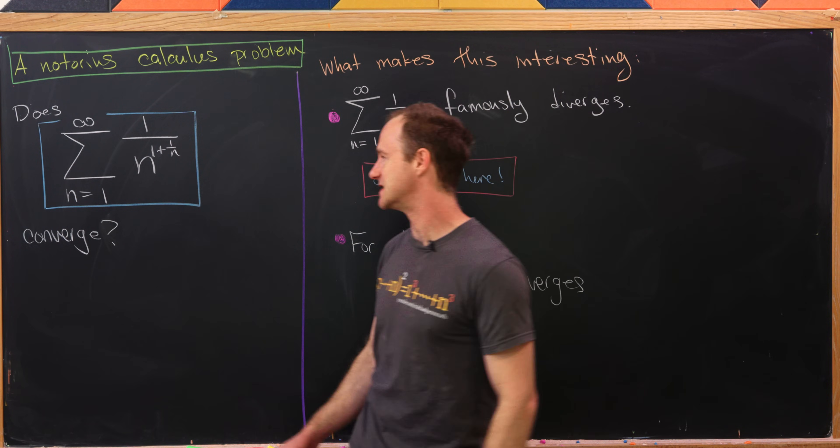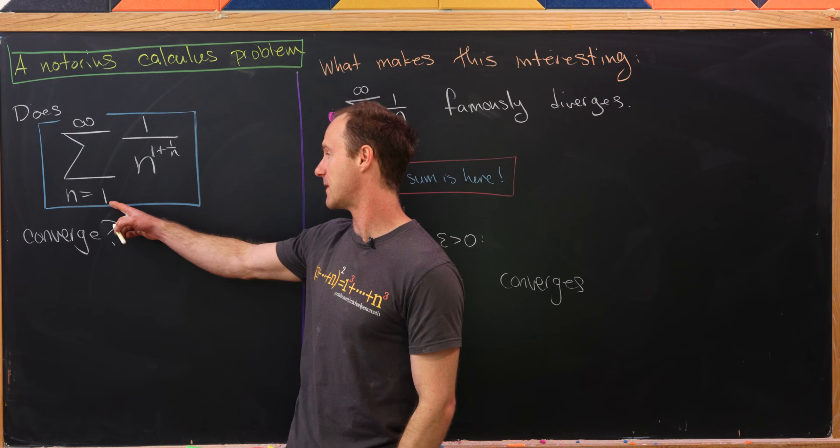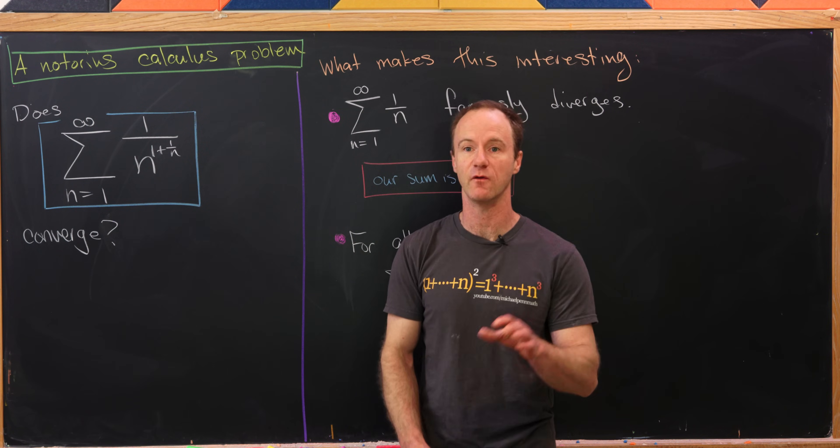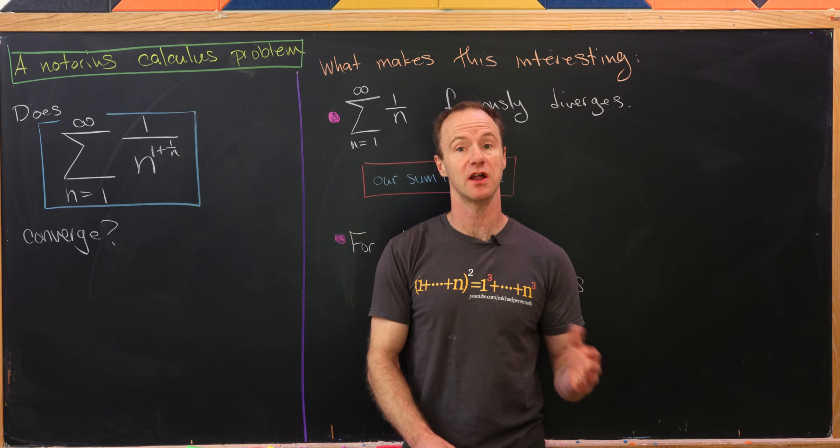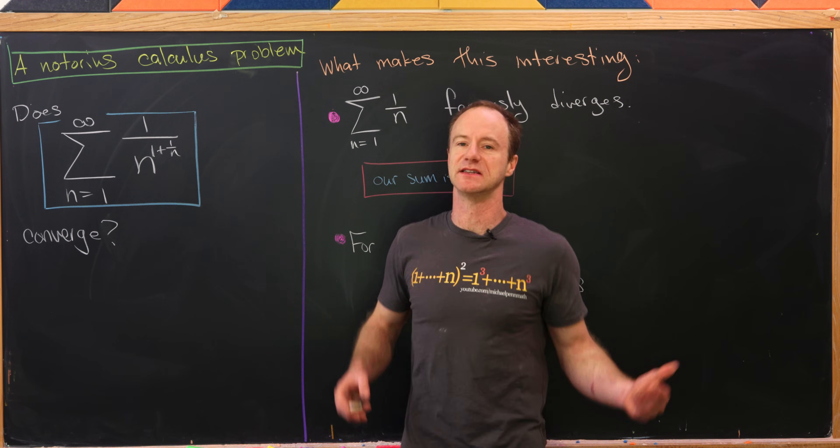So the question is: does the sum as n goes from 1 to infinity of 1 over n^(1 + 1/n) converge? Or I guess does it diverge?